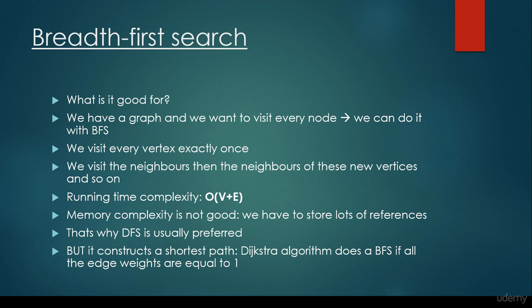In breadth-first search we visit every vertex exactly once — we visit the neighbors, then the neighbors of those new vertices, and so on. The running time complexity is linear: O(V + E), where V denotes the number of vertices and E the number of edges. The memory complexity is not as good because we have to store many references or pointers in a queue abstract data type, which is why depth-first search is usually preferred.